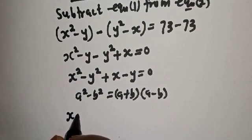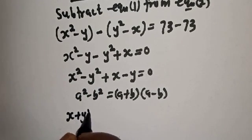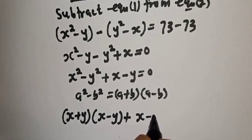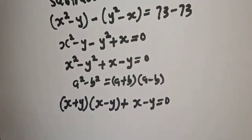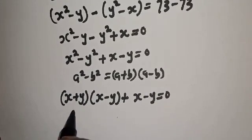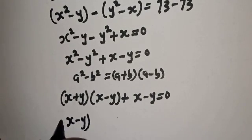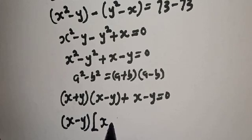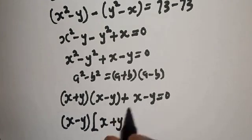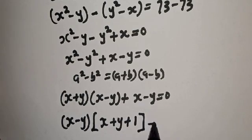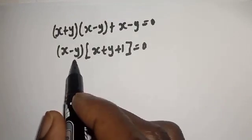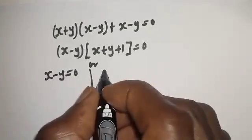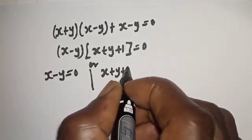Recall that A squared minus B squared equals (A plus B)(A minus B). So S squared minus Y squared plus S minus Y equals 0 becomes (S minus Y)(S plus Y) plus (S minus Y) equals 0. Since (S minus Y) is common, factoring out gives (S minus Y)(S plus Y plus 1) equals 0. There are two cases: the first case is S minus Y equals 0, or the second case is S plus Y plus 1 equals 0.